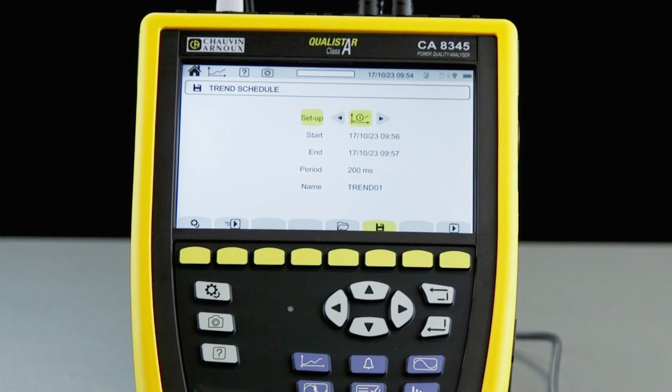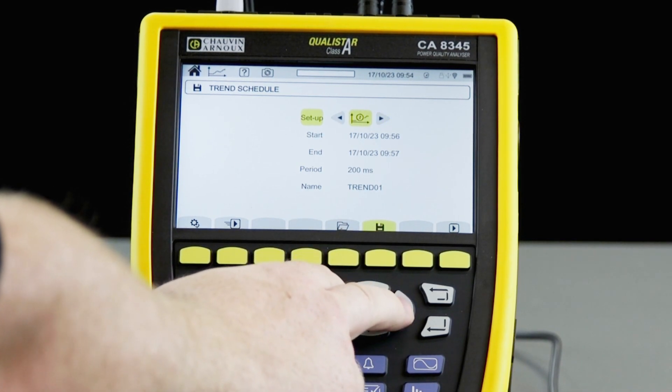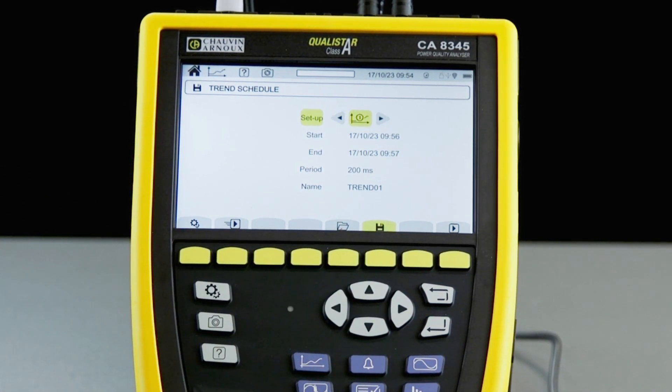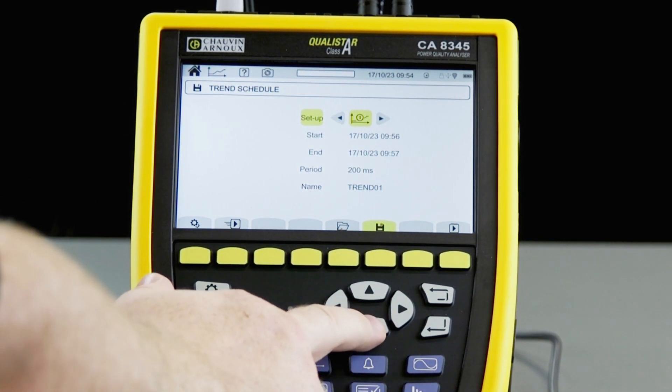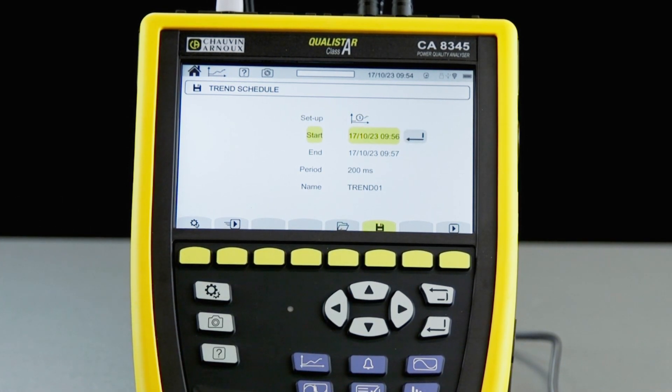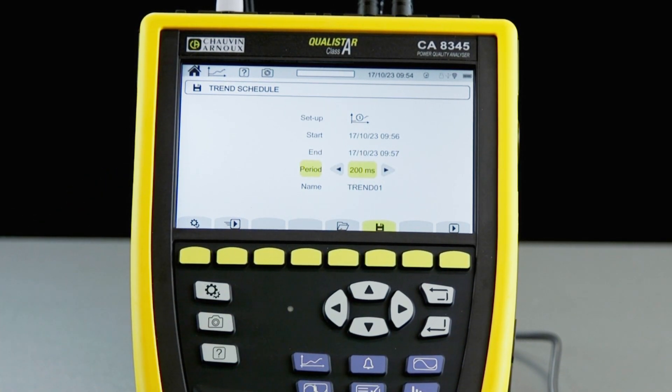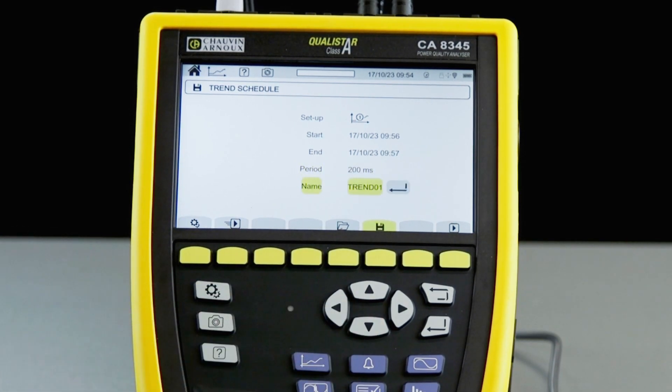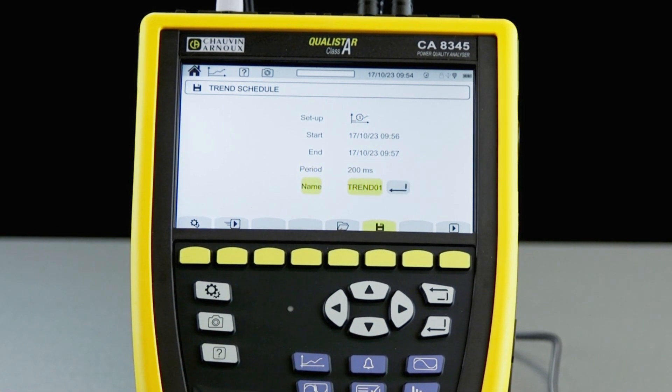At the top, we select the trend mode from the previous list that we configured in the settings menu. We can then set the start time and date, the end time and date, the aggregation period between 0.2 of a second or 200 milliseconds all the way up to two hours. And we can also name the trend logging session.